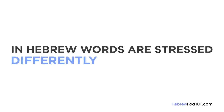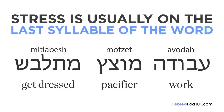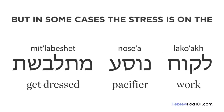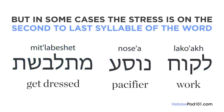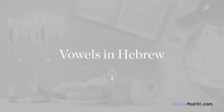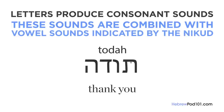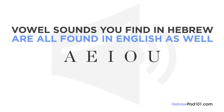In Hebrew, words are stressed differently than in English. Stress is usually on the last syllable of the word. But in some cases, the stress is on the second-to-last syllable. Letters produce consonant sounds, and these are combined with vowel sounds indicated by the Nikud. Vowel sounds found in Hebrew are all found in English as well.